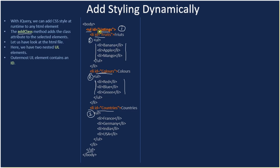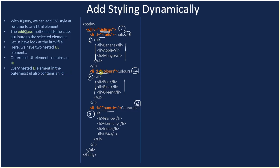The outermost UL element contains an ID, and we are setting that ID as 'listings'. Every nested list element in the outermost UL also contains an ID. The outermost UL has three list elements — list one, list two, and list three — representing fruits, colors, and countries as a list.